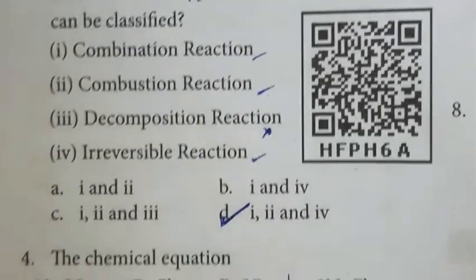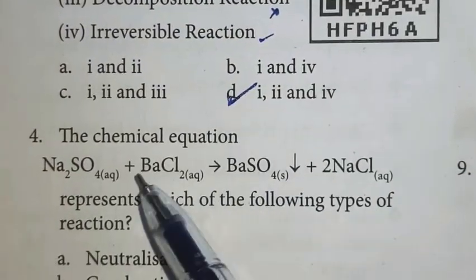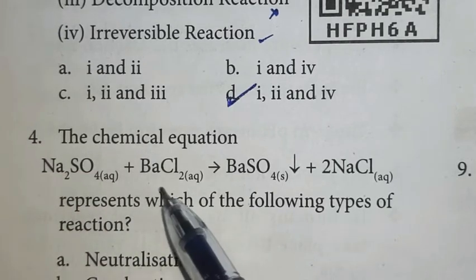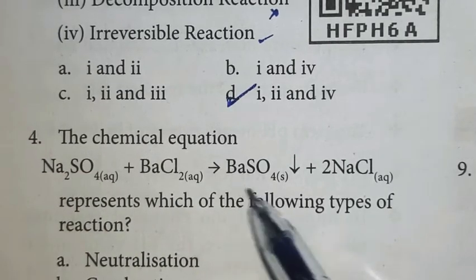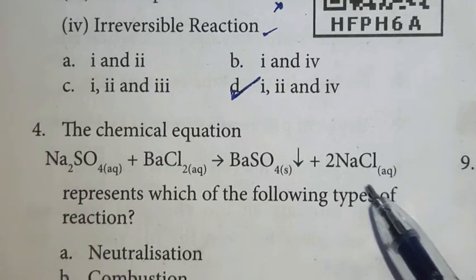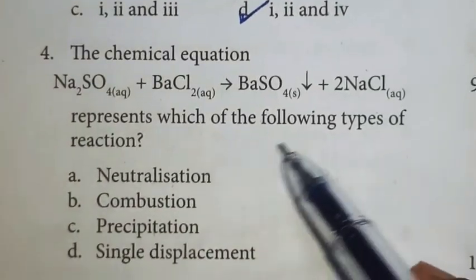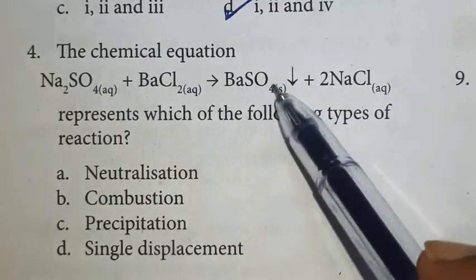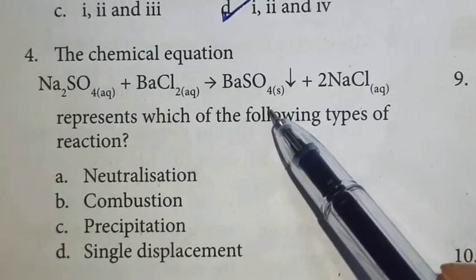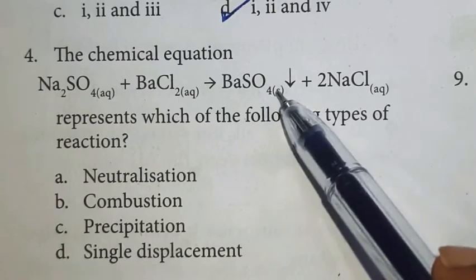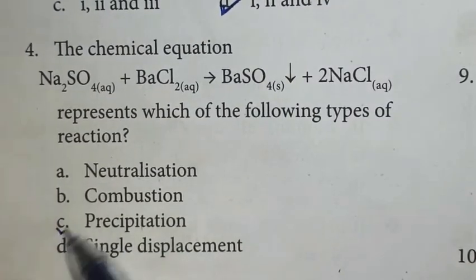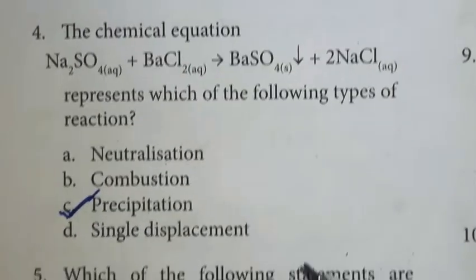Fourth question: The chemical equation sodium sulfate reacts with barium chloride which gives barium sulfate and sodium chloride represents which type of reaction? Here barium sulfate is a solid, precipitated in aqueous solution. So that's precipitation. Option C is the right answer.